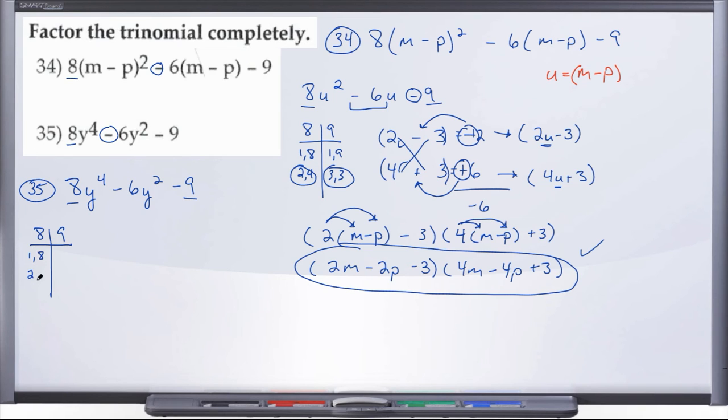So 1 and 8, 2 and 4, 1 and 9, 3 and 3. So let's go ahead and start with the ones closest together. So 2 and 4, 3 and 3. And when we cross multiply, 2 times 3 gives us 6. 4 times 3 gives us 12.